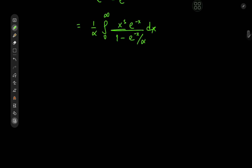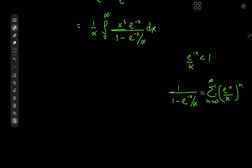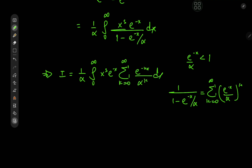Now let's take note of something else: x here goes from zero to infinity, so e to the negative x is less than 1. And that goes for e to the negative x by alpha as well, because the alpha parameter is greater than 1. That means we can expand 1 by (1 minus e to the negative x by alpha) as an infinite sum using the geometric series. We have the sum over k from zero to infinity of e to the negative x by alpha, all to the k. This implies that the target integral i equals 1 by alpha times the integral from zero to infinity of x to the s times e to the negative x times the sum over k from zero to infinity of e to the negative k x divided by alpha to the k, dx.